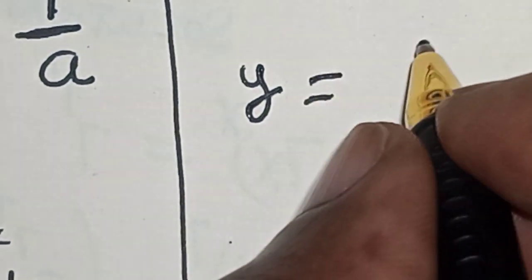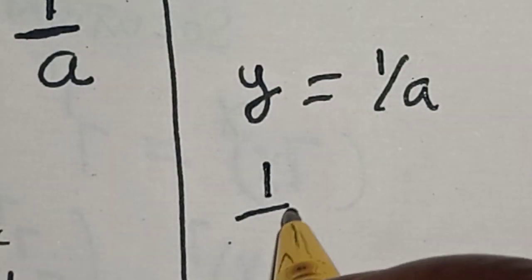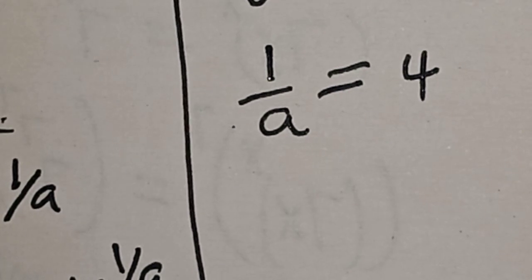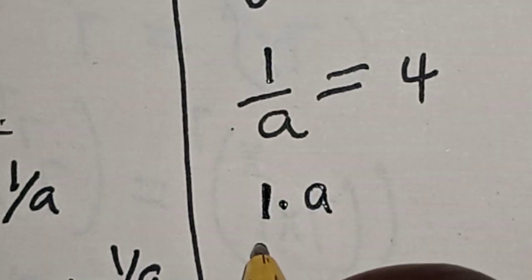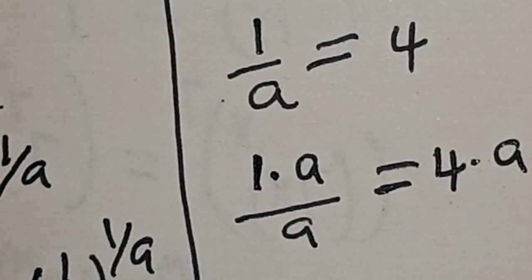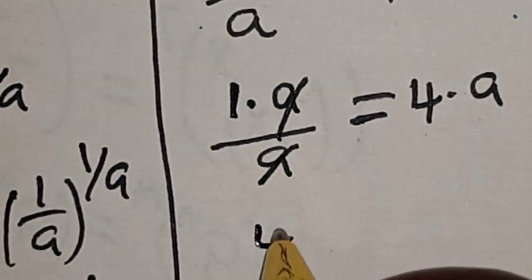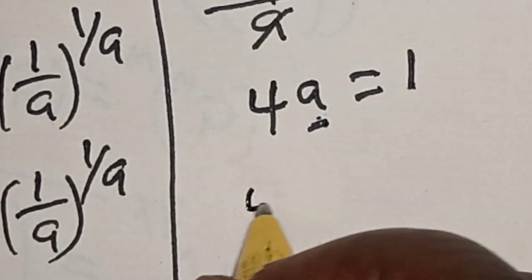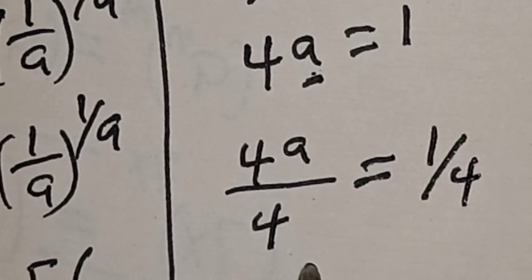Since y is equal to 1 over a, let's substitute: 1 over a is equal to 4. Multiplying both sides by a, this cancels, giving 4a is equal to 1. We are looking for the value of a, so let's divide both sides by 4: 4a divided by 4 is equal to 1 divided by 4.